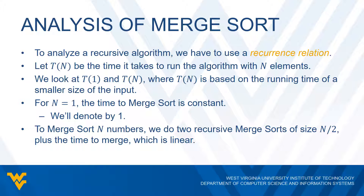Now, how do we merge sort N numbers? What happens is we take two pieces of the array, each of size N over two, and we do two recursive merge sorts on those arrays. So we have the time to do those two merge sorts plus the time to merge, which we've already determined is linear time to merge the two sorted arrays into the final array.